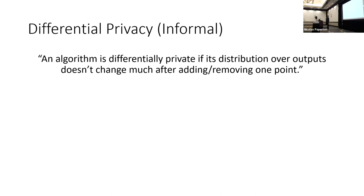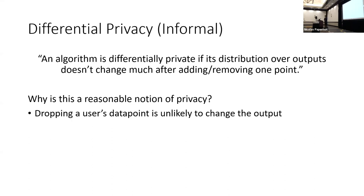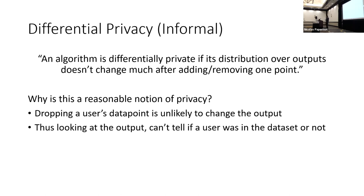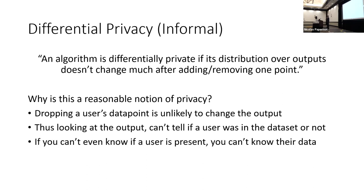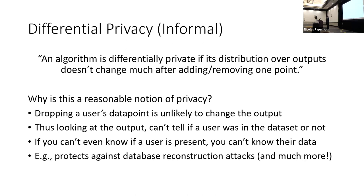Why does this imply privacy for individuals? Informally: dropping a user's data point is unlikely to change the output distribution, so you can't tell whether a user was in the dataset or not — even if you know exactly what their data was. That's a very strong guarantee. If you can't even figure out whether an individual was in the dataset, there's no way to guess anything about what their actual data point was. This prevents many types of attacks, including everything discussed so far.